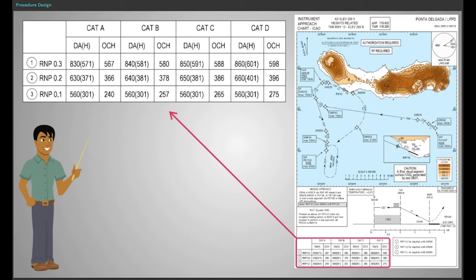The calculation of the minimum is based on the obstacles in either the final approach corridor or the missed approach corridor, which is the same as conventional procedures.